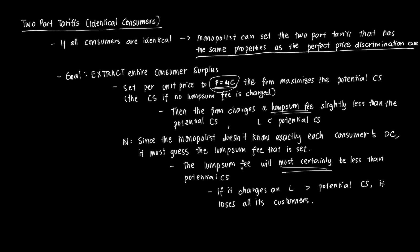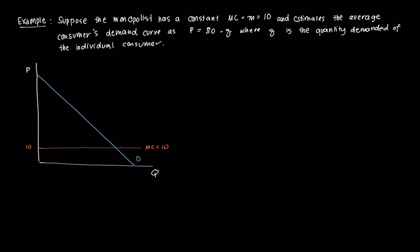Let's show this with an example. Suppose the monopolist has a constant marginal cost equal to 10, and it estimates that each consumer in its market has an individual demand curve of P equal to 80 minus Q, where Q is the quantity demanded by each individual consumer. Under this scenario, the optimal price and quantity supplied satisfies the condition P equal to marginal cost.